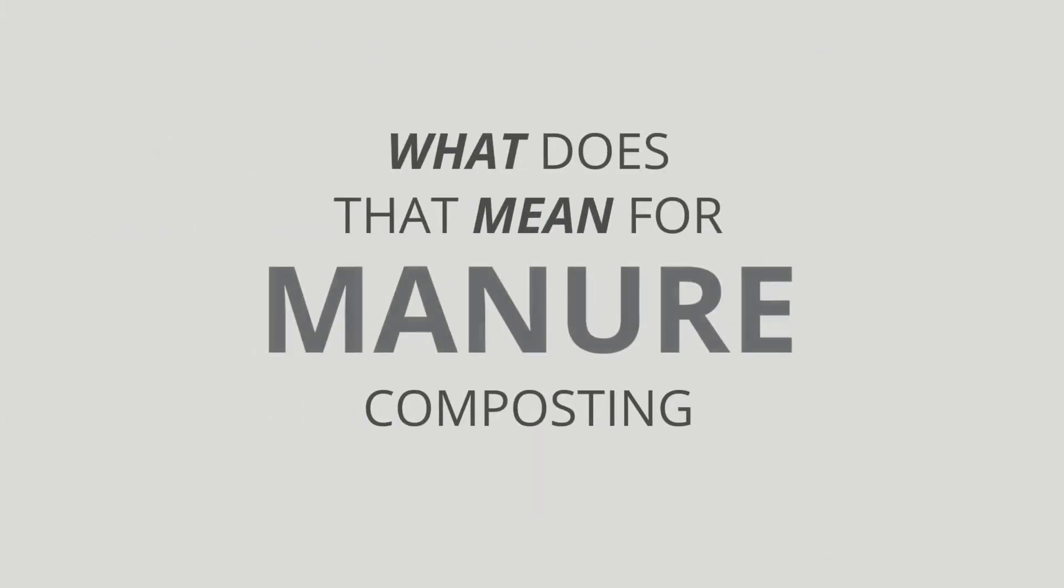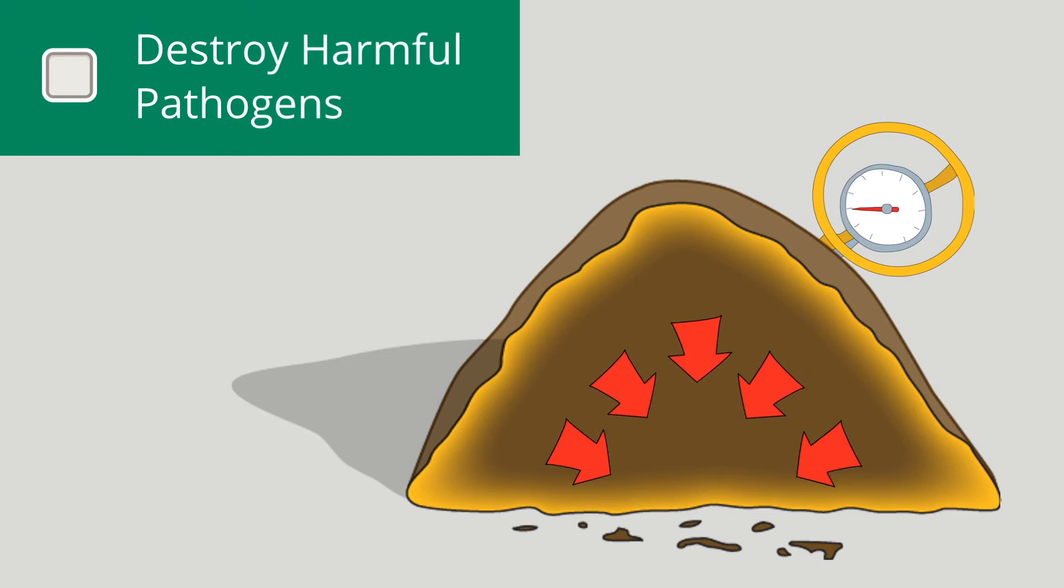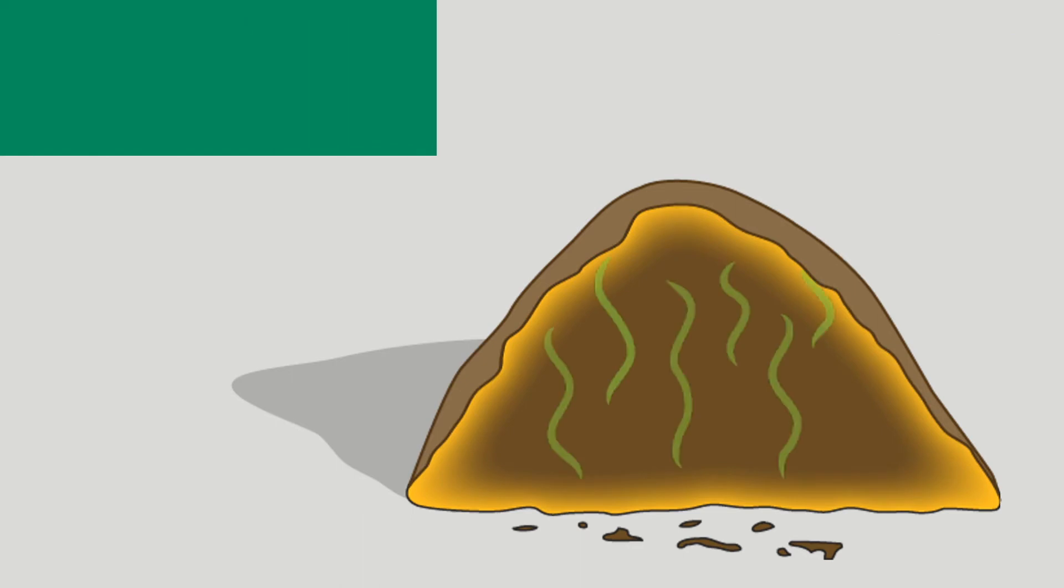After inoculation, windrow temperatures surpass 131 degrees and remain above this level for long periods of time, more than satisfying harmful pathogen reduction requirements. This unique temperature profile draws oxygen to the center of the pile, eliminating the need for frequent turning.